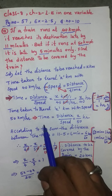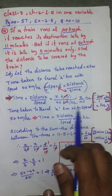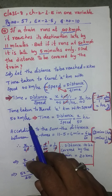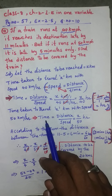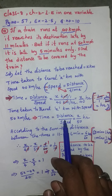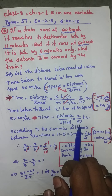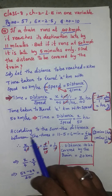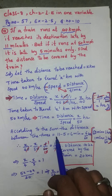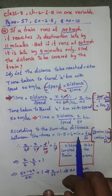If the speed increases to 50 km/h, then time = x/50 hours. According to the problem, the difference between the two travel times equals 11 − 5 = 6 minutes. So: x/40 − x/50 = 6 minutes.